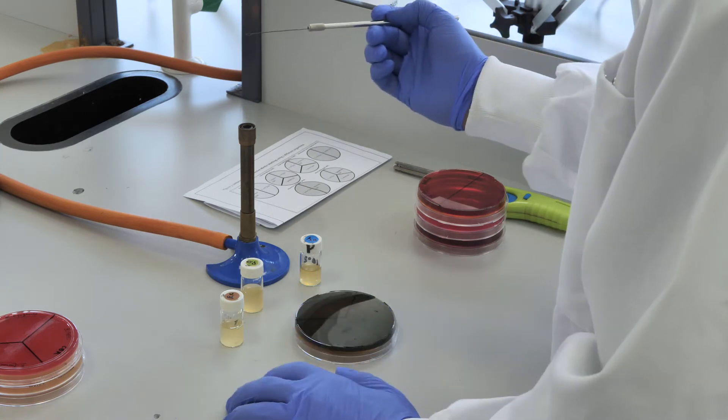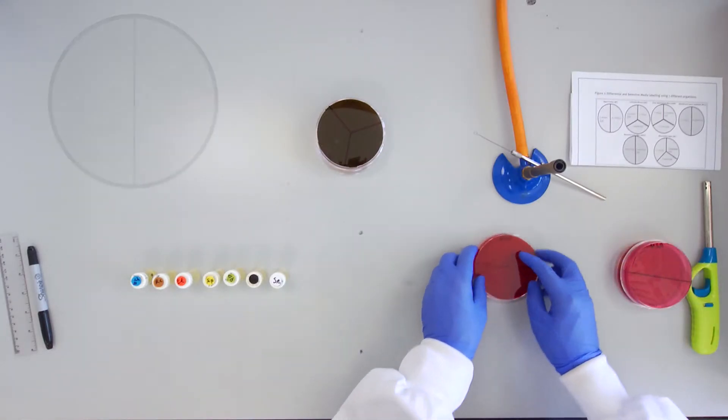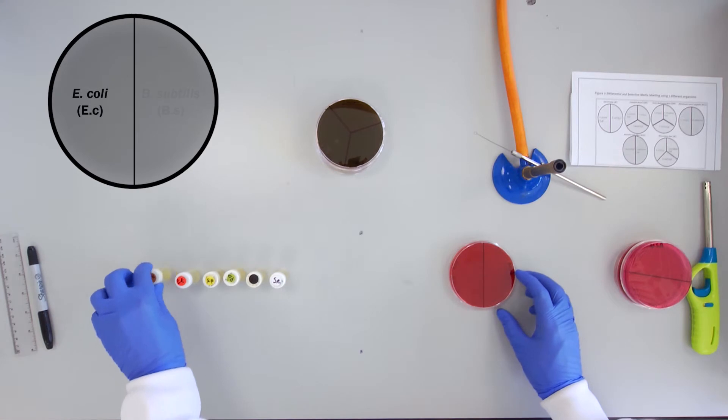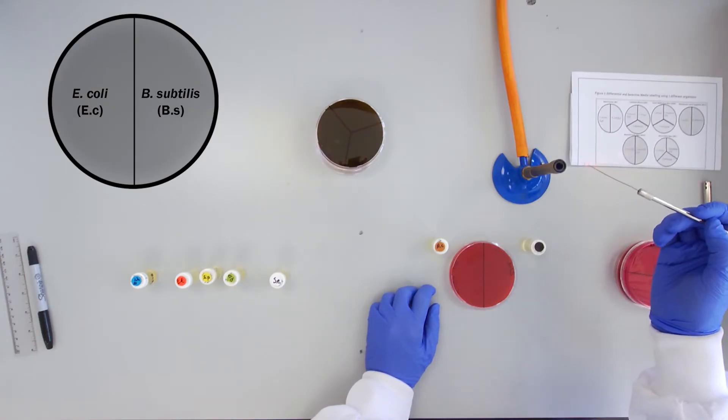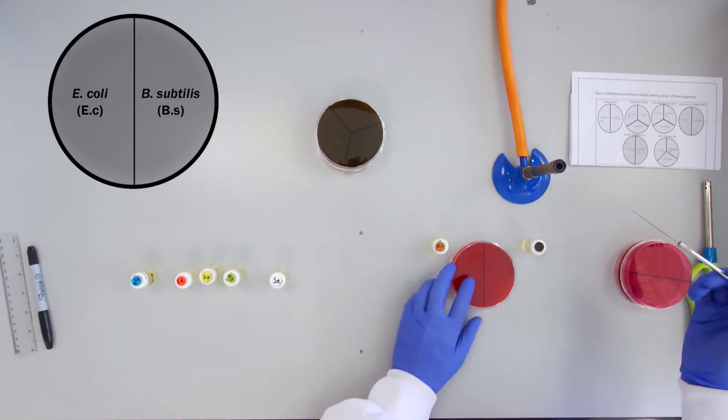The membrane laurel sulfate agar medium or MLSA is a bright red color and will be inoculated with E. coli and Bacillus subtilis.